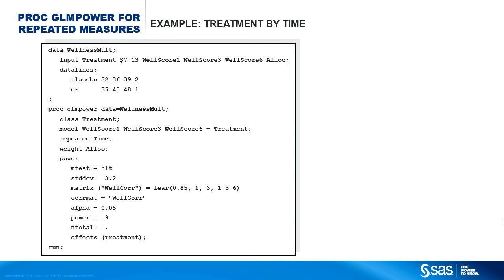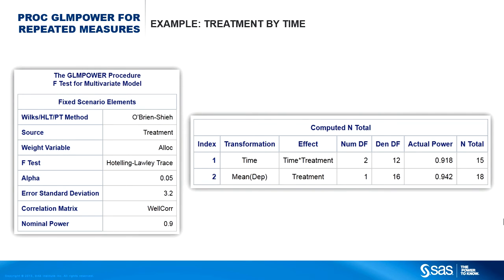Here are all the SAS statements combined to show the full input for your power analysis. You add the EFFECTS=TREATMENT option to the POWER statement to filter results down to only those including treatment among the between-subject effects. The table on the right shows the required sample sizes for the time-by-treatment interaction and for the overall treatment effect. Each computed sample size is rounded up to the nearest multiple of 3 — the sum of the sample size allocation weights of 2 and 1 — to ensure integer sample sizes for individual treatment groups. The Actual Power column shows the power computed at the resulting sample sizes.